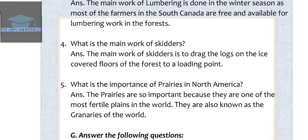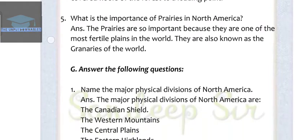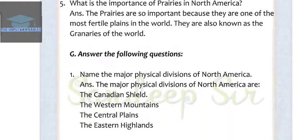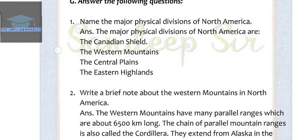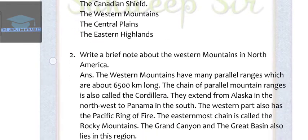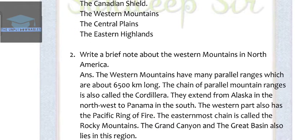Exercise G. Question 1: Name the major physical divisions of North America. The answer is the major physical divisions of North America are the Canadian Shield, the Western Mountains, the Central Plains, and the Eastern Highlands.